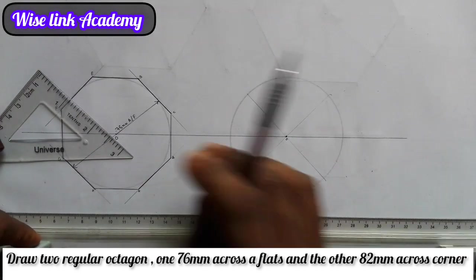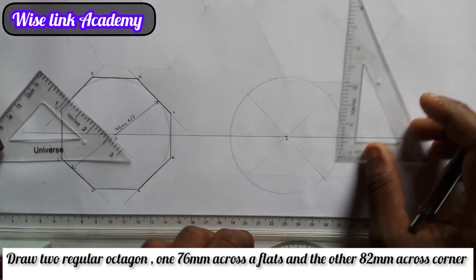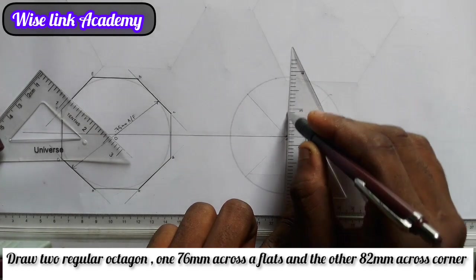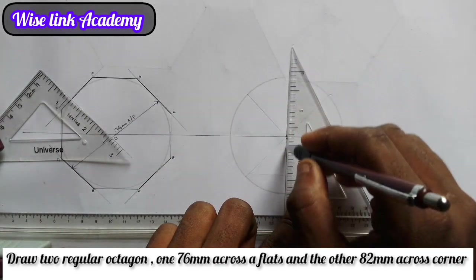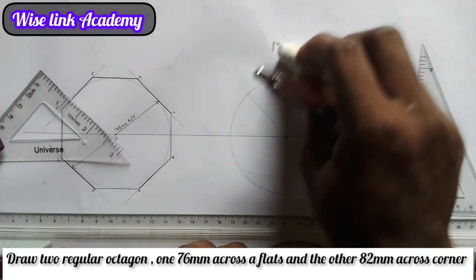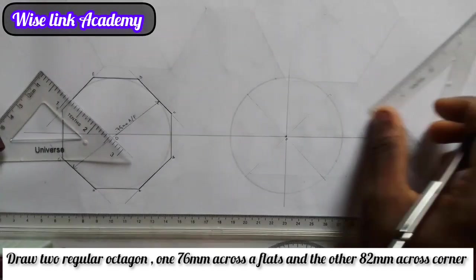So my next task now is to take my T-square this way, this one here, and draw a vertical line. I have this. I'll draw a vertical line. I have this.